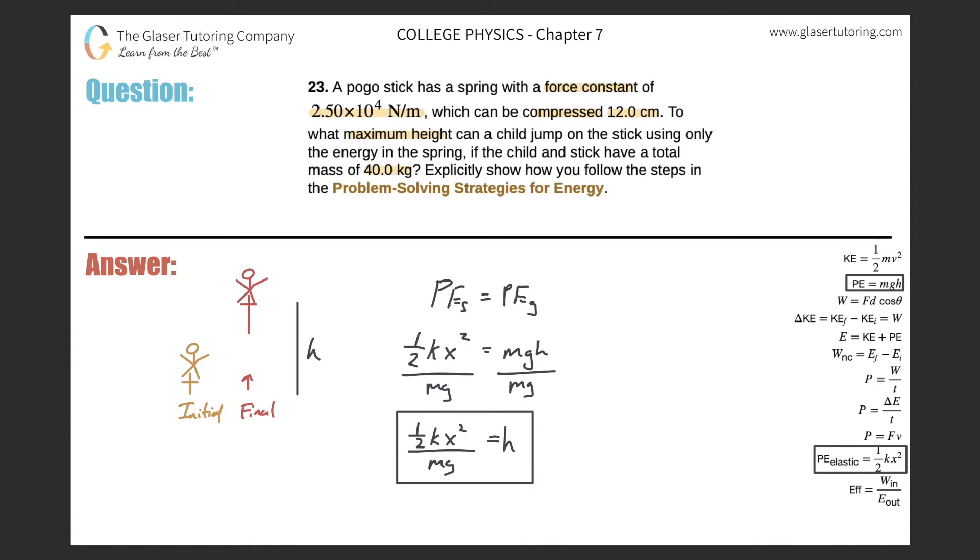All we got to do now is just plug in. The height will equal one half times k, which they gave to us as 2.5 times 10 to the 4, multiplied then by the compression. Now remember, they gave it to us in centimeters, that's 12 centimeters, but we need it in meters. So simply move that decimal two places to the left. That's going to be 0.12 squared, all divided by the mass of the system, the child and the pogo stick, so that's 40 kilograms, and then multiplied by g, which is 9.80.